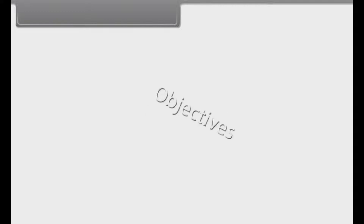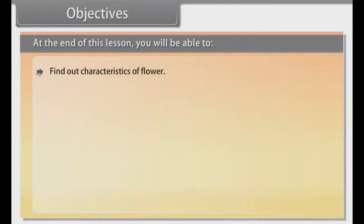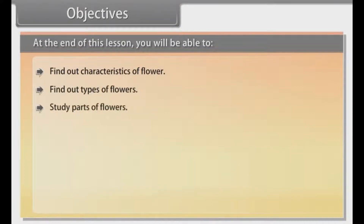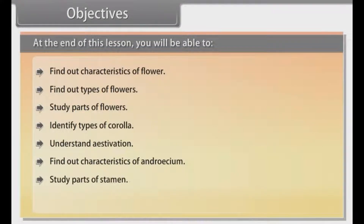Objectives. At the end of this lesson, you'll be able to find out characteristics of flower, find out types of flowers, study parts of flowers, identify types of corolla, understand estivation, find out characteristics of androecium, study parts of stamen, and find out types of androecium.